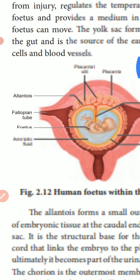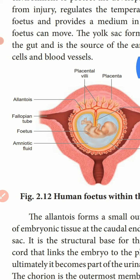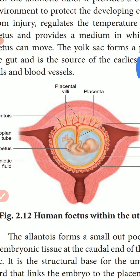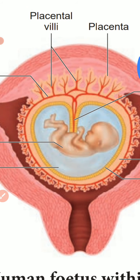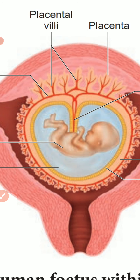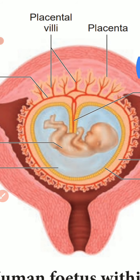When the trophoblast cells of the blastocyst send out several finger-like projections called chorionic villi, these villi carry fetal blood and are surrounded by sinuses that contain maternal blood — that is, the mother's blood.